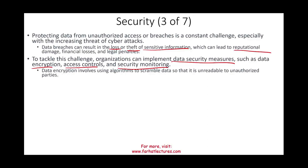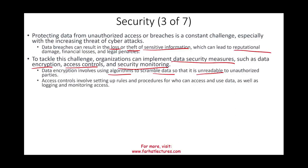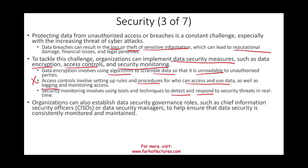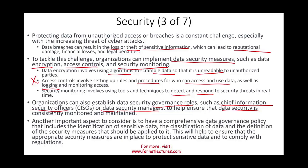Data encryption means using an algorithm to scramble data so that if someone finds it, they cannot read it — it's unreadable to unauthorized parties because they don't have the keys to unscramble the data. Access control means setting up rules and procedures for who can access and use the data, using login and monitoring access. Security monitoring involves tools and techniques to detect and respond to security threats in real time — this is what we call cybersecurity. Organizations can also establish security governance roles such as a Chief Information Security Officer and data security managers.